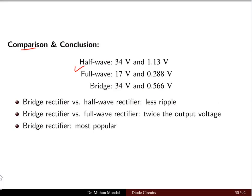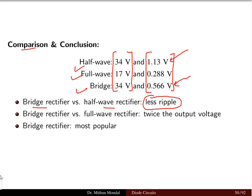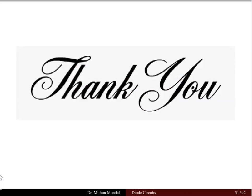Comparing the three rectifiers: the bridge rectifier has a ripple voltage of 0.566 V while the half wave rectifier has 1.13 V — so the bridge rectifier has less ripple. Compared to the full wave center-tap, the bridge rectifier provides 34 V output versus 17 V, so the bridge gives twice the output voltage. Therefore, bridge rectifiers are the most popular and are commonly used with the capacitor input filter. We have now covered two important filters: the choke filter and the capacitor input filter. The next lecture will discuss further topics in rectifier circuits. Thank you.